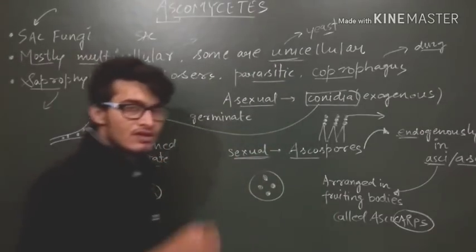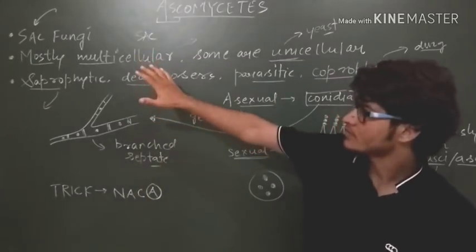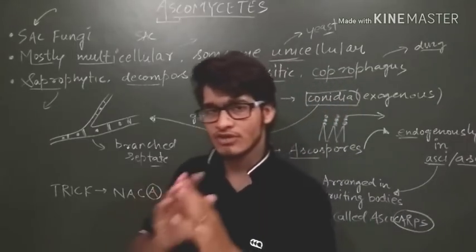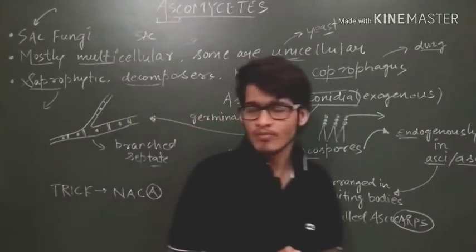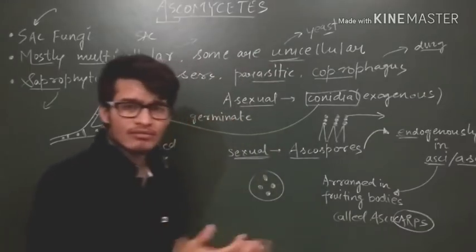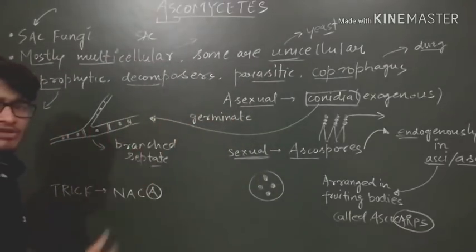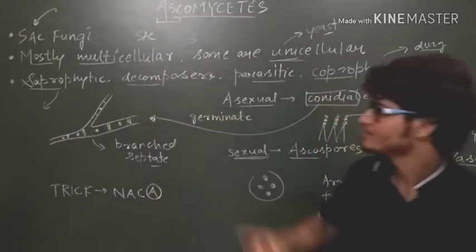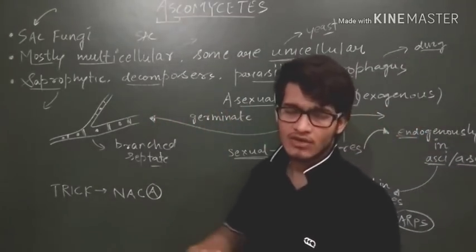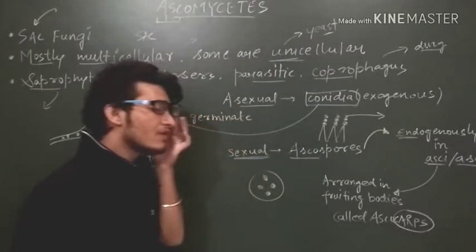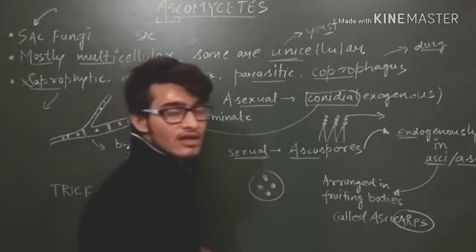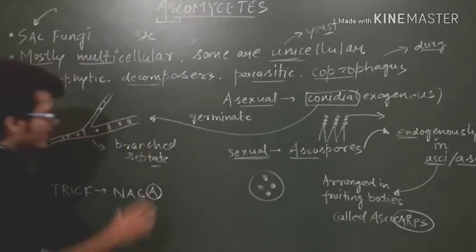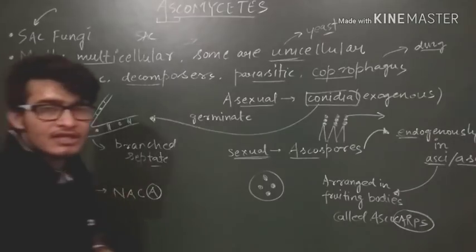Here we will revise - it will be very beneficial for you. It is known as Sac-Fungi, you just have to use the three initial alphabets and you will never forget this one. These are mostly multicellular like Penicillium and they can be unicellular like yeast or Saccharomyces cerevisiae or baker's yeast. They cannot make their own food so they can be saprophytic, they can be decomposers, they can be parasitic, and they can be coprophagus - growing on dung.